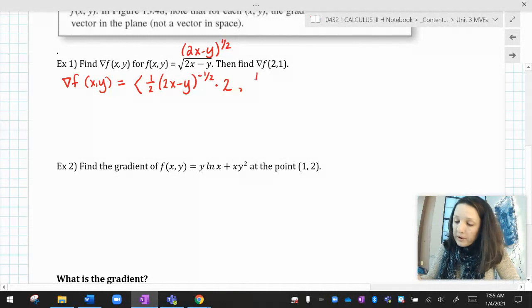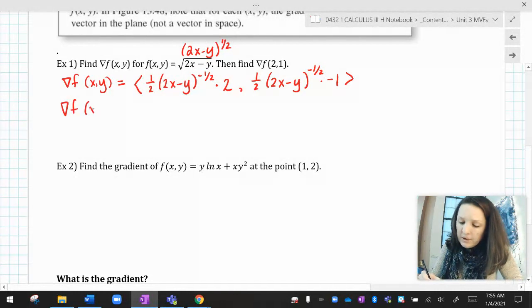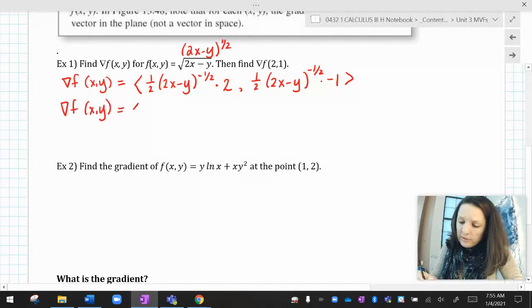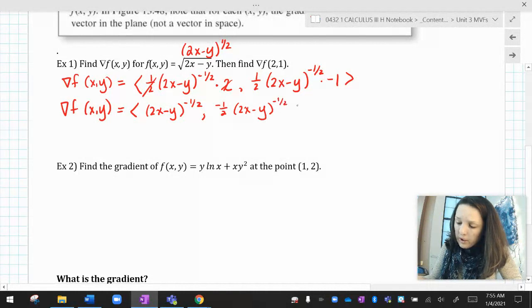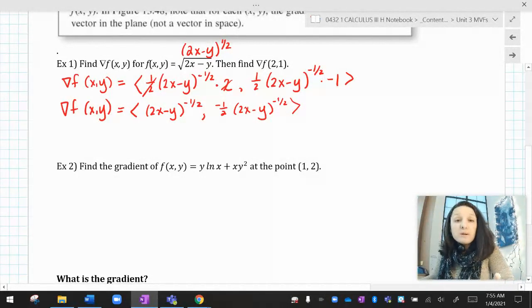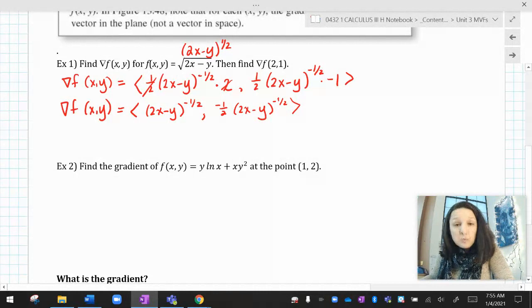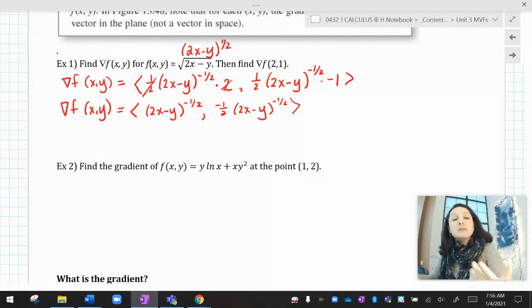And then the derivative with respect to y is going to be quite similar, times the derivative of the inside with respect to y gives me a gradient vector of, let's see, those would cancel. This is going to be 2x minus y to the negative 1/2, comma negative 1/2, 2x minus y to the negative 1/2. So there's the gradient vector in terms of x and y, and what you'll notice now is that I have a vector, and this vector has variables in it. Those variables are x and y. No big deal.